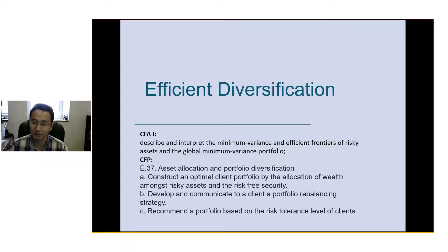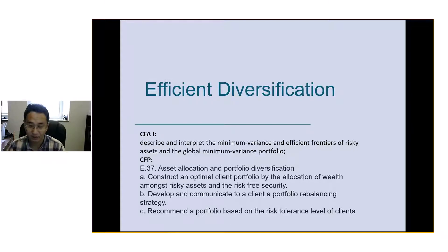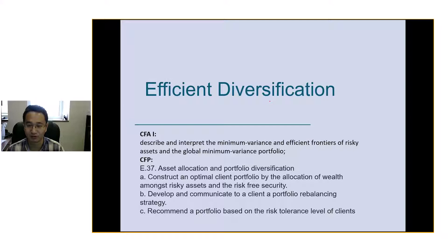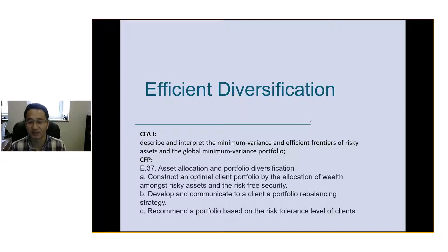Hello everyone. Today we are going to talk about efficient diversification. This is a really important concept. I listed some learning objectives from CFA and CFP curriculum. In FRM, it's just a lot of math related to it. It's tested everywhere even though I just listed only two. CFA Level 3 is a large part about understanding diversification and how to apply that. It aligns with CFP.